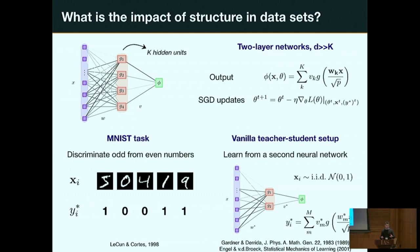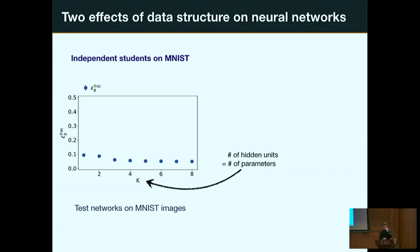The teacher-student setup comes from statistical physics and has quite a bit of history and analysis. Now let me show an example where training on these two problems goes pretty differently. I take two networks with the same activation function, same number of hidden units, same everything, except slightly different initial conditions drawn from the same distribution. I plot their fractional generalization error on the MNIST task as a function of the number of parameters.